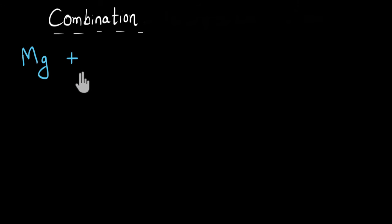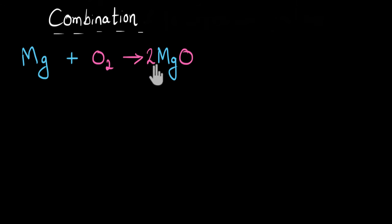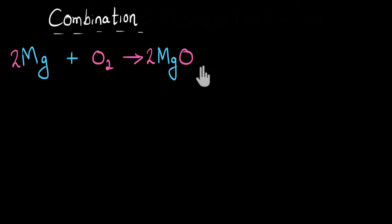Whenever something burns in air, it reacts with the oxygen present in the air. So magnesium (Mg) reacts with oxygen, and since this is a combination reaction, they combine to give one single product: magnesium oxide (MgO). Balancing the equation: we have two oxygen on the right, so we put a 2 in front of MgO, and then 2 in front of Mg as well. Magnesium combines with oxygen to give magnesium oxide — the white powder — and in this process, a lot of heat is given out.